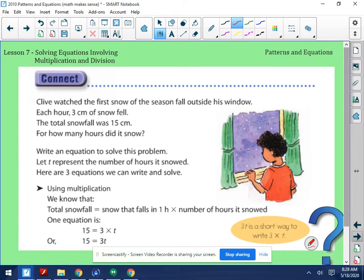Here's another problem. Clive watched the first snow of the season fall outside his window. Each hour, 3 centimeters of snow fell. The total snowfall was 15 centimeters. For how many hours did it snow?